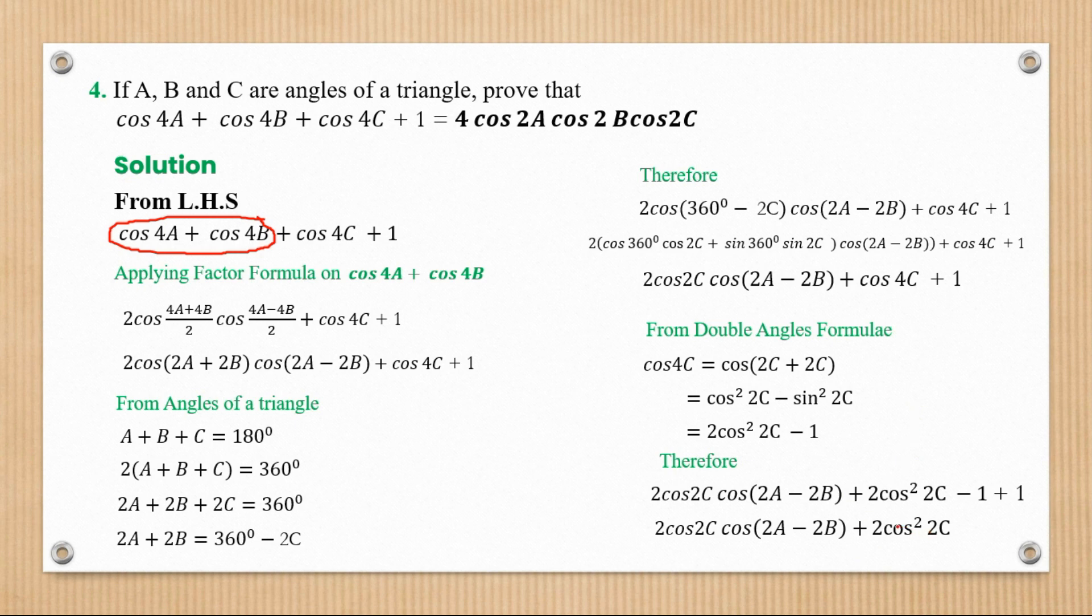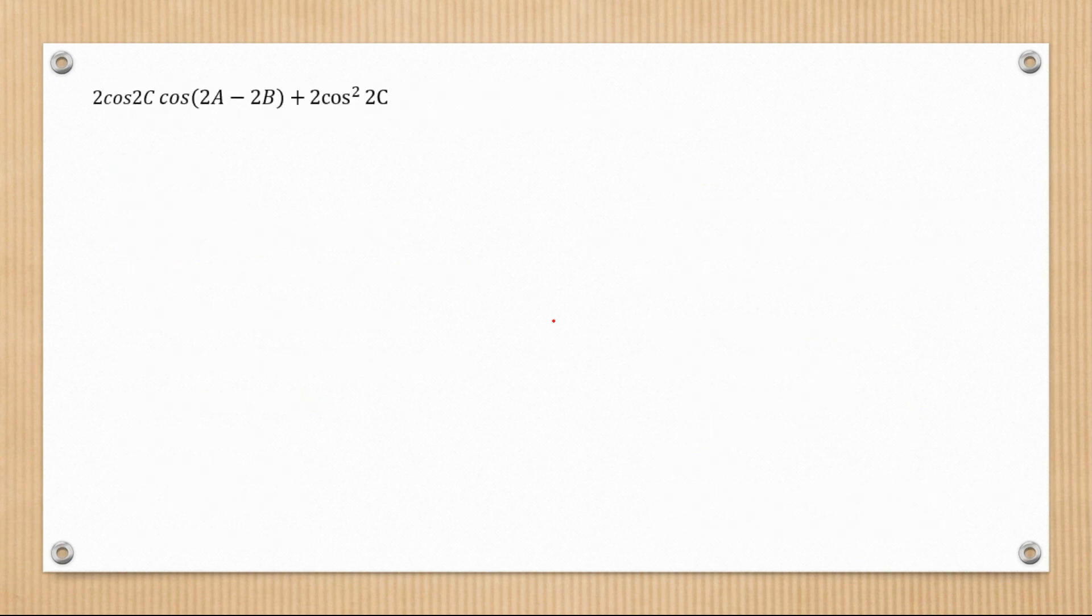Now this becomes simpler to work with, because we can simply factorize out 2 cos 2C. Factor that out of brackets, and we remain with that.